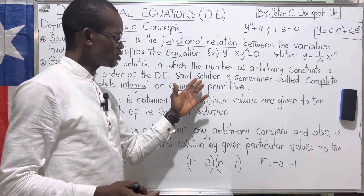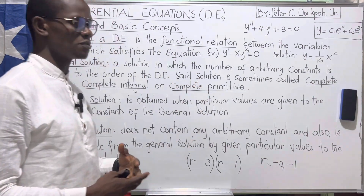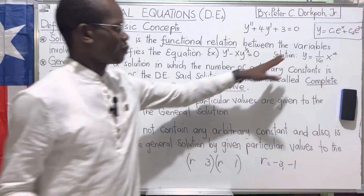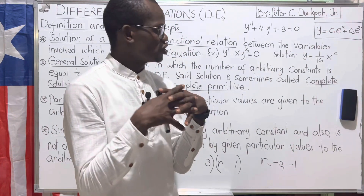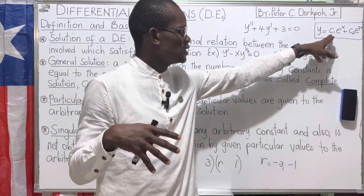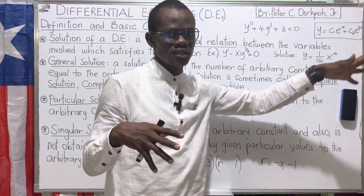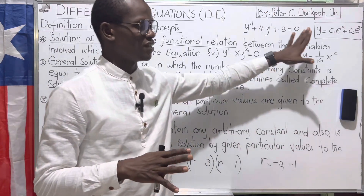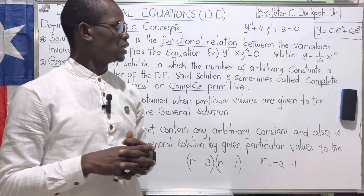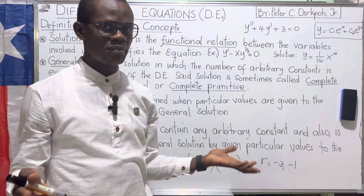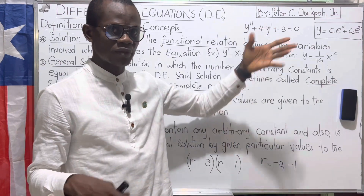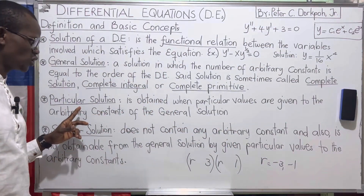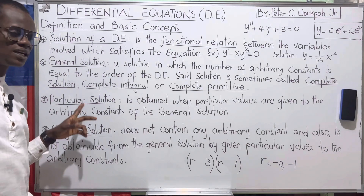A general solution is sometimes called a complete solution because the arbitrary constants are not yet known — they are just there. Whenever you find those arbitrary constants and replace them, you get the next type of solution, called the particular solution.